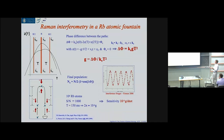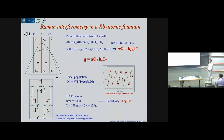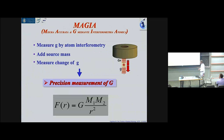With realistic numbers close to what we have in our apparatus — one million rubidium atoms, a signal-to-noise of 1000 (shot-noise limited), and T = 150 milliseconds — you get a sensitivity on the order of 10⁻⁹ g per shot. Since this is done in an atomic fountain where you launch the atom and it takes about one second, this is essentially the sensitivity per second.